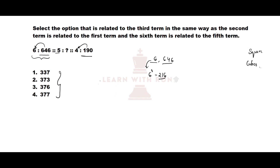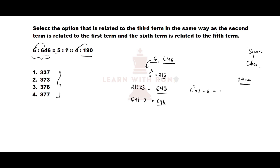Observe that 216 and 646 are almost 3 times. If I multiply 216 with 3, the value I get is 648. But I want 646, so if I subtract 2 from 648, I am getting 646. So what have I done here? 6 cubed multiplied with 3 and subtract 2 from it, I am getting 646.